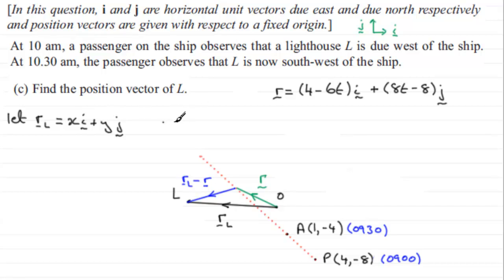Well first of all, what I want to do, we'll just say it follows that if we were to work out, let's say, r_L minus r, this vector here, then it's going to be x, y if I write it as a column vector x, y minus the position vector r which is up here. I'll write that as a column vector as well. It's going to be 4 minus 6t and then 8t minus 8.